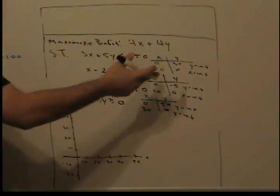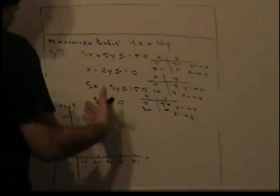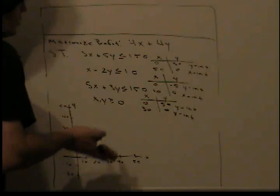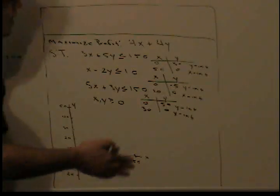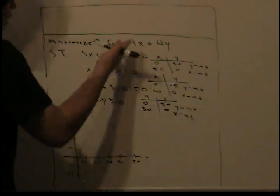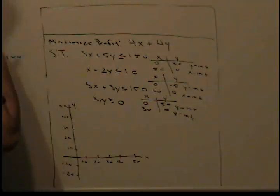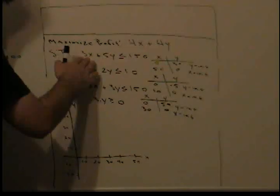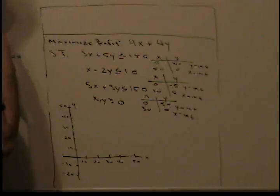The y intercept is where the graph hits the y-axis when x is 0, and the x intercept is where the graph hits the x-axis when y is 0. For example, when I set x equal to 0, I'm left with 5y ≤ 150, and solving that gives y equals 30. They're just simple inequalities you're solving.